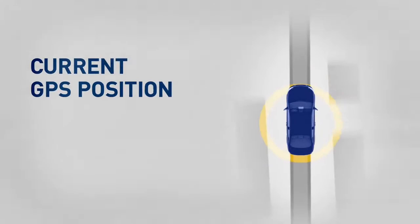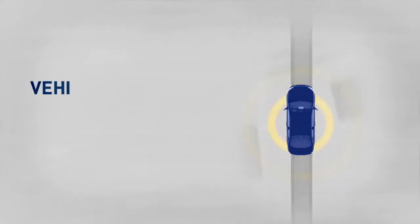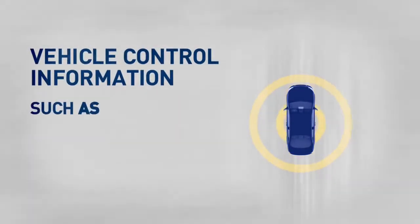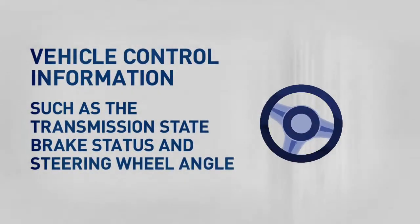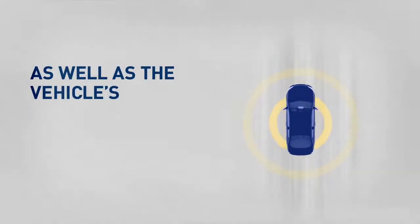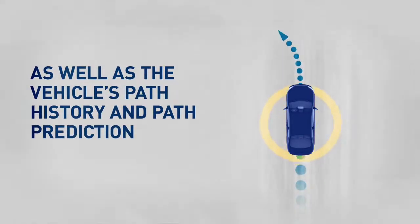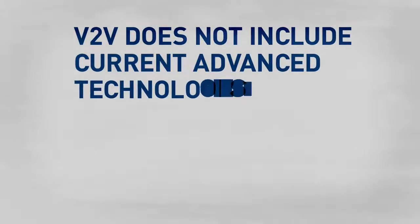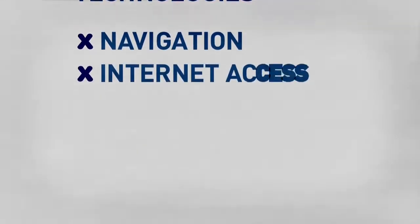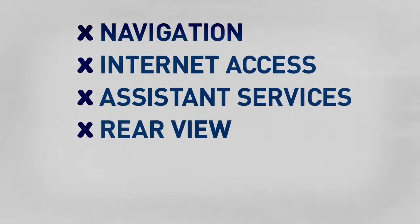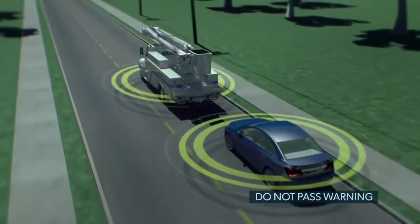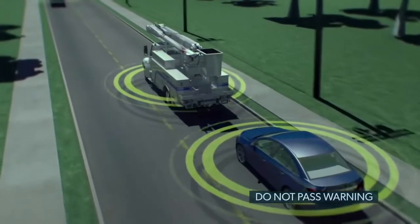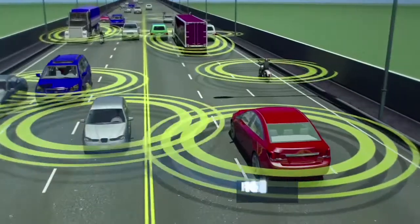Vehicles equipped with V2V systems can transmit messages related to current GPS position, vehicle speed, acceleration, heading, transmission and brake status, steering wheel angle, vehicle path history, and vehicle path prediction. V2V does not include navigation, rear-view cameras, or any advanced technologies. This system is still in a pilot phase and not fully commercialized by vehicle manufacturers.